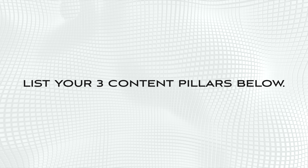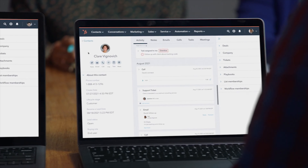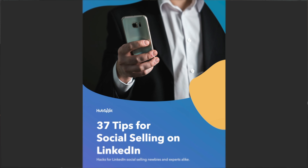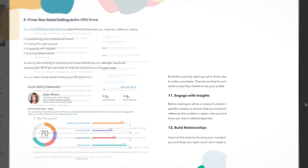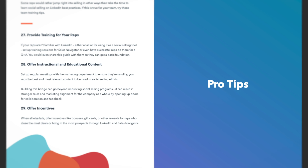Instead of this being just another YouTube video you click on, watch, and forget, I'm leaving a 23-page guide in the description and pinned in the comments, containing 37 tips on how to do social selling on LinkedIn. This guide was created by HubSpot, who are kindly sponsoring this section. Just click the link, enter your email, and they'll send it straight to your inbox for free.